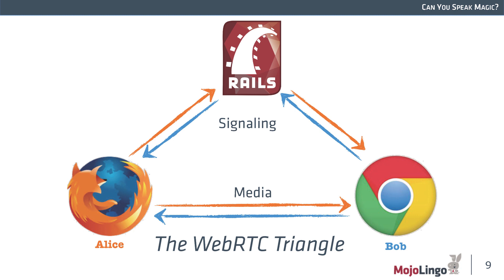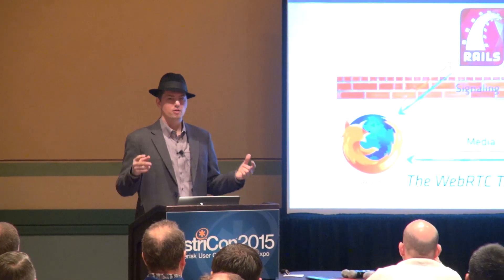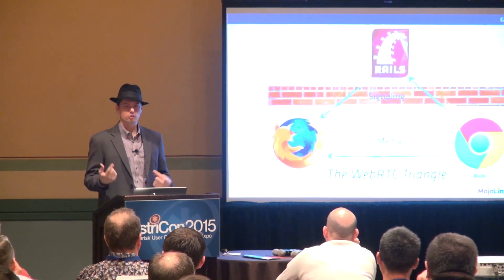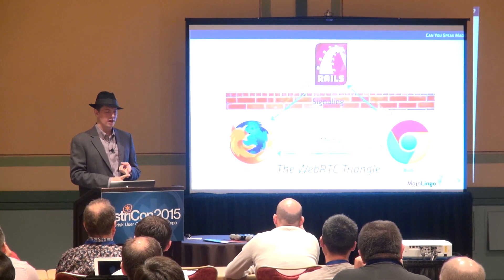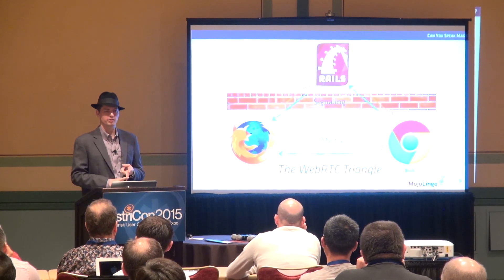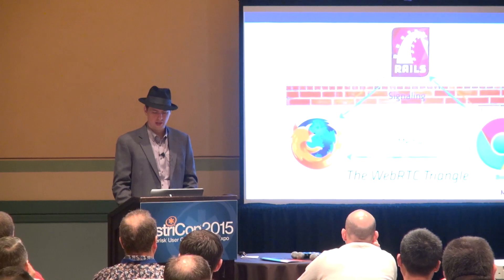One of the other big advantages of this is that in a lot of cases, if you end up putting a firewall through your signaling layer, your media can still pass. For example, if we're here at AstriCon and we all go to a website and start a WebRTC conversation, we will end up sending media only on the local LAN. We don't have to worry about the firewall blocking things and we don't have to worry about saturating the link. WebRTC does a lot to optimize for that.